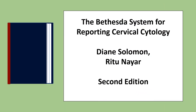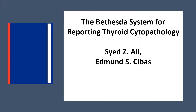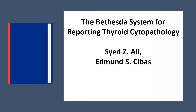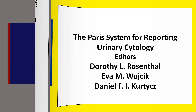We follow various systems for reporting particular samples. For Gynae Pap smears, we use the Bethesda system of reporting cervical cytology. For thyroid, we use the Bethesda system for reporting thyroid cytopathology. For salivary gland, we use the Milan system for reporting salivary gland cytopathology. For urine cytology, we use the Paris system for reporting urinary cytology.